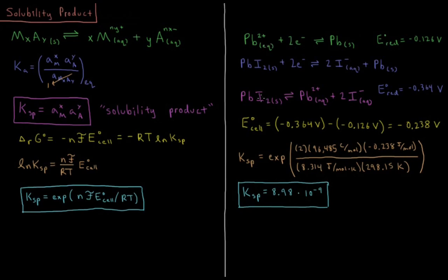We have our, as we have it written here, this is going to be the reduction. So standard reduction potential of this cell is negative 0.364 volts. So that is going to occur at our cathode.